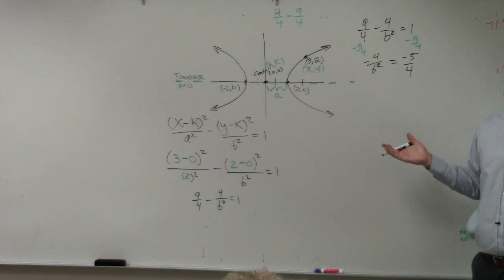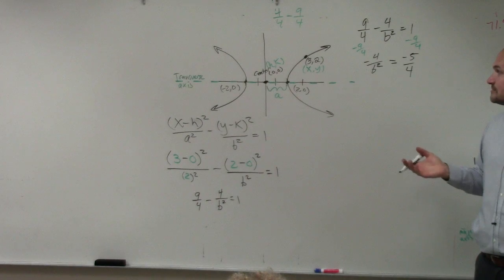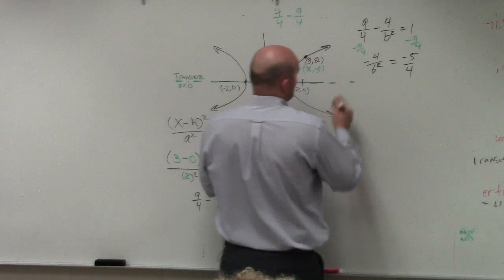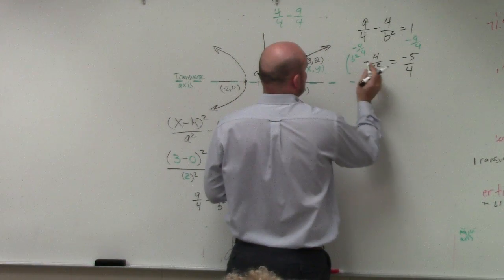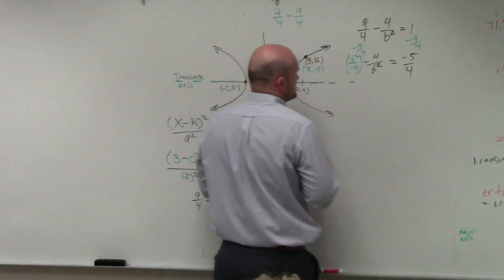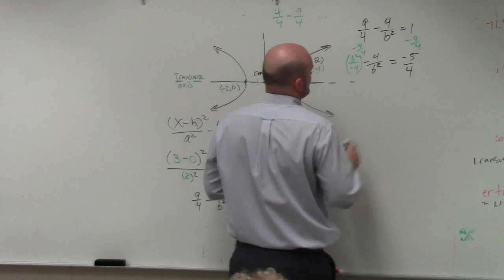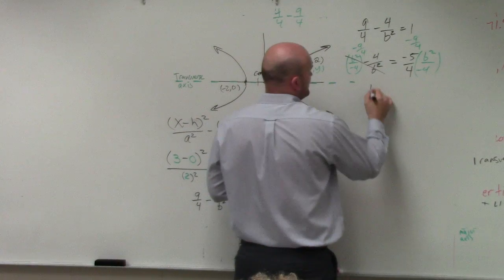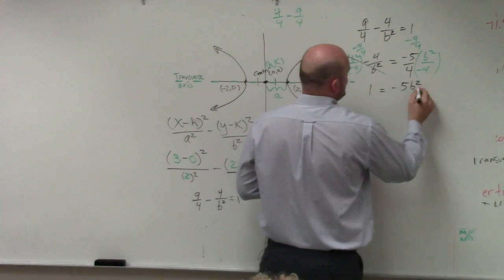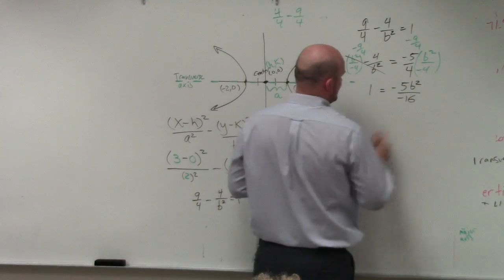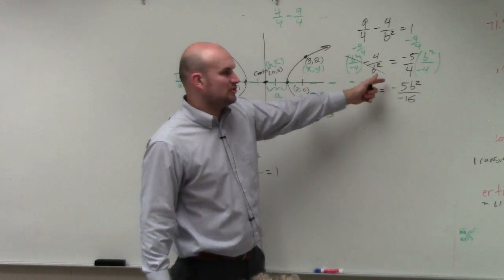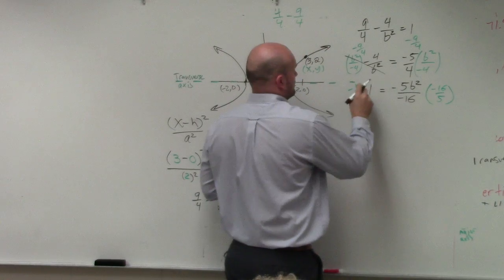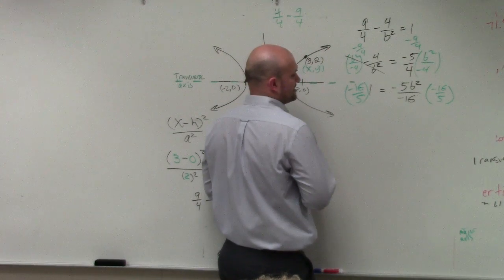Then you could use the cross product if you guys wanted to. I really do not like the cross product. I like multiplying. You could also think about this as multiplying by the reciprocal because I just don't like the cross product. So I'm going to multiply by b squared over negative 4 on both sides. b squared over negative 4. That multiplies to give me 1 equals negative 5 b squared over negative 16.